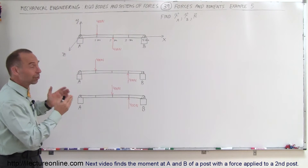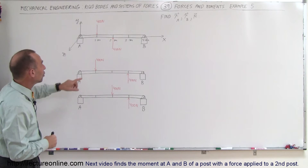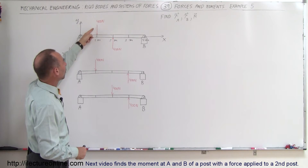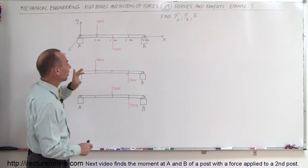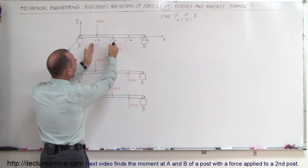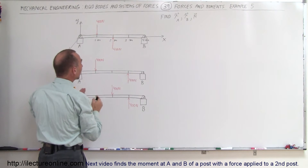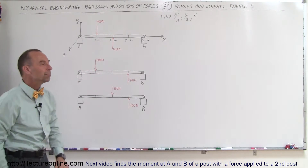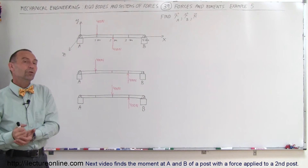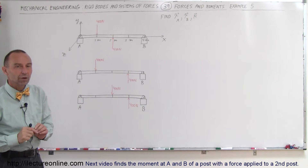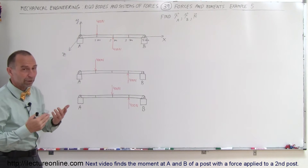Here we have three identical beams. They're all four meters long. Notice we have a couple of 400 Newton forces acting on the beam — one at one meter, one at two meters. We'll see what happens when we move the second force two meters away from the first force instead of one meter. And then what happens when we take the two forces and simply move them to a different location on the beam, still one meter apart. In each case, we're going to find the torque relative to A, the torque relative to B, and the moment of those two forces, or the moment of the couple.